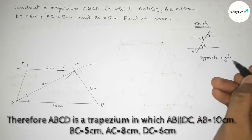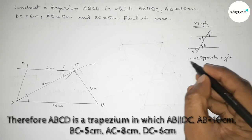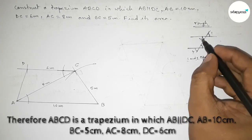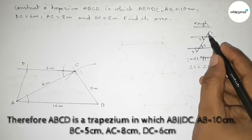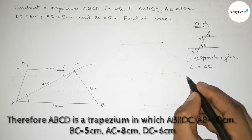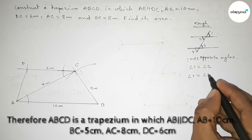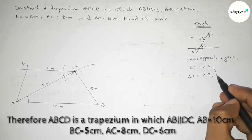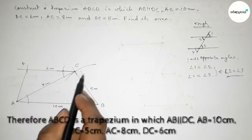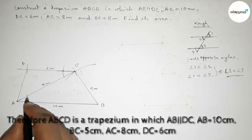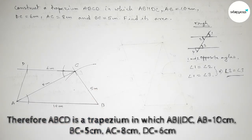We know that opposite angles are equal, so angle one equals angle two. Also angle one equals angle three as these are corresponding angles. From this we can see that angle two equals angle three. So these are the two parallel lines, and if you take AC as a transversal then obviously these two angles are equal. That's all, thanks for watching.